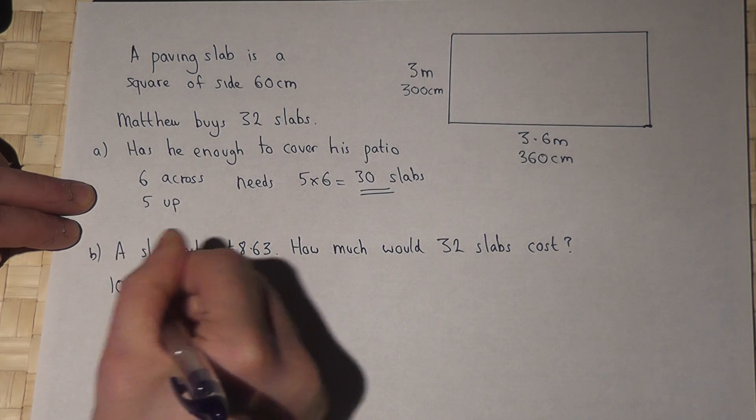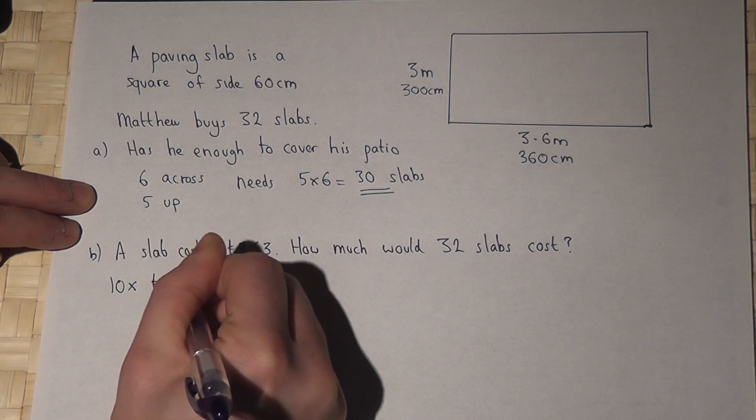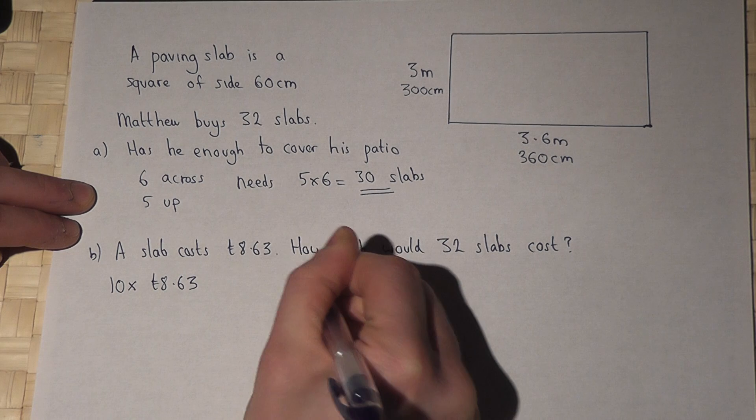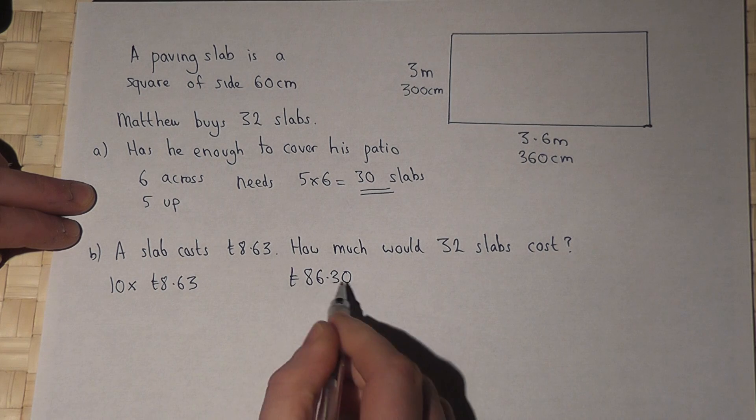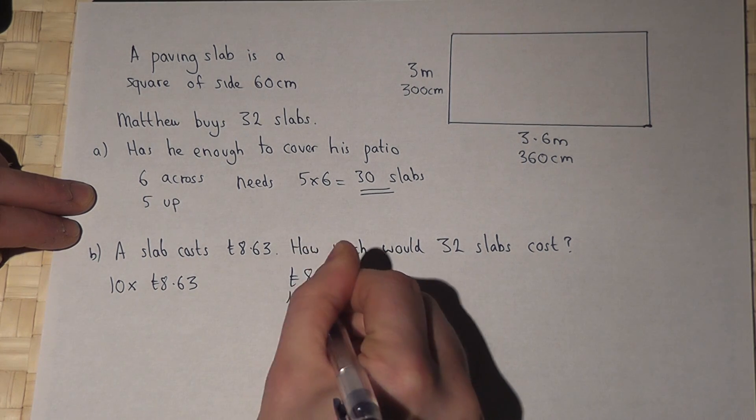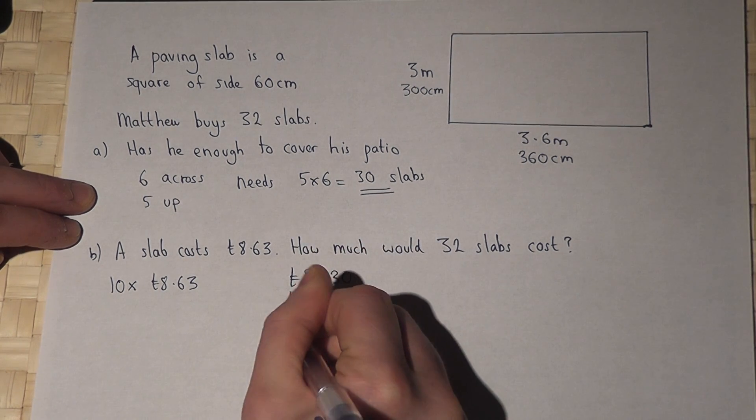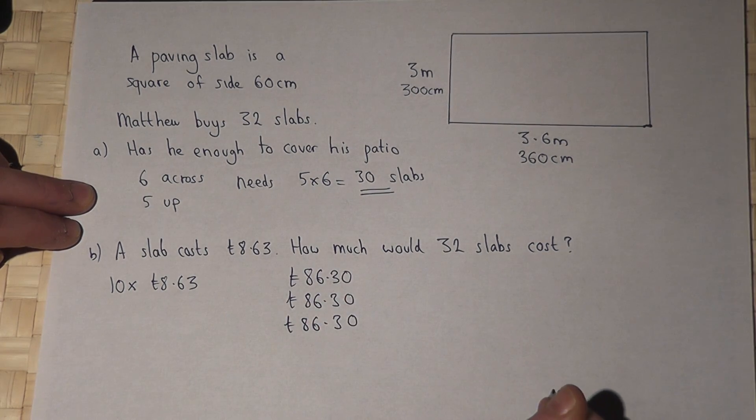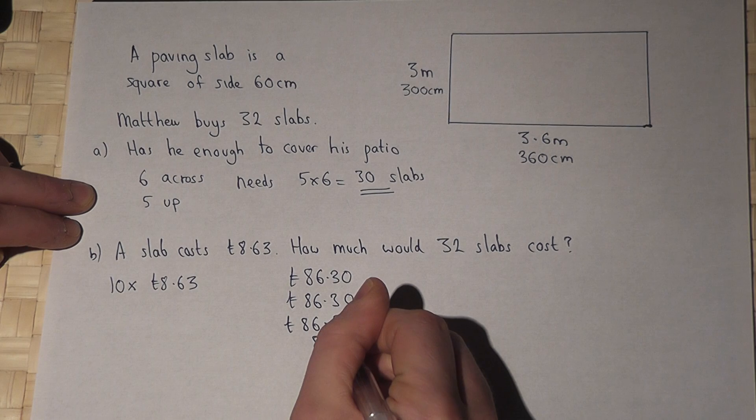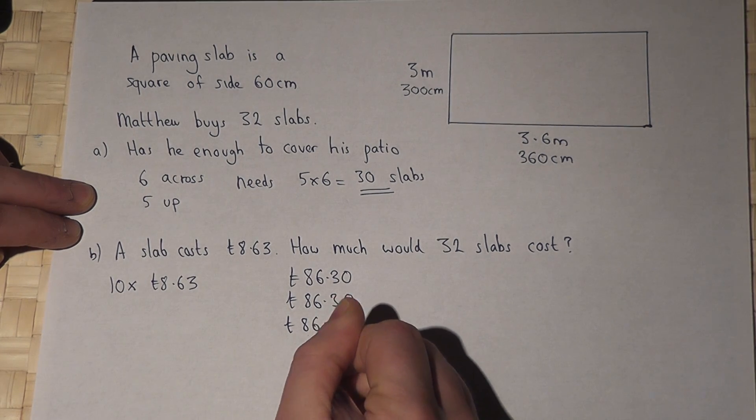Now, we know that 10 lots of £8.63 is £86.30. So, that's 10 lots, another 10, another 10, that's 30, plus 1, and another 1.